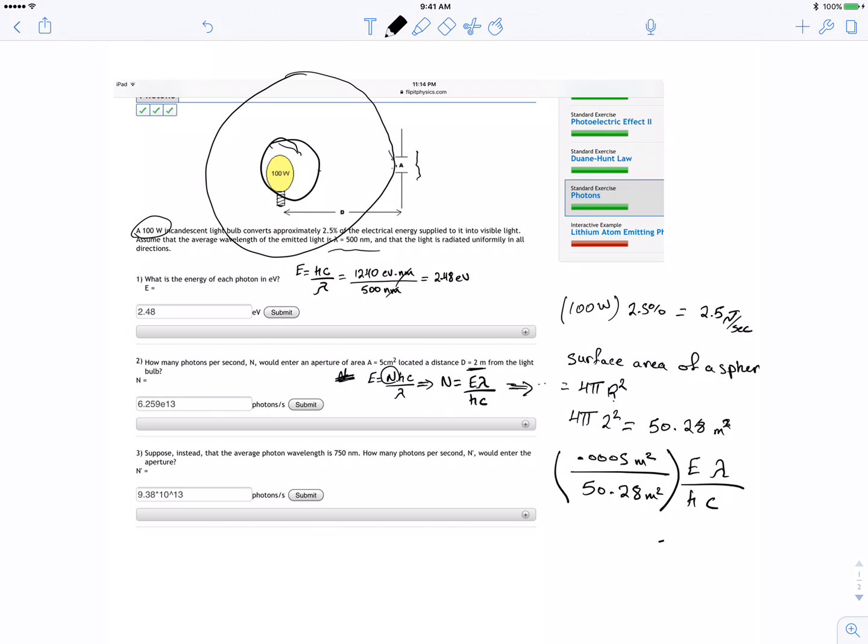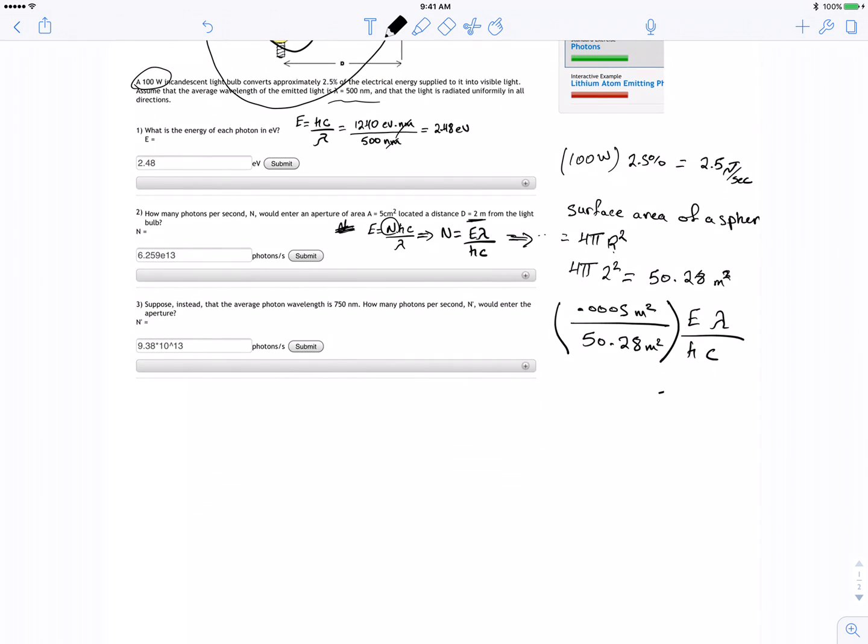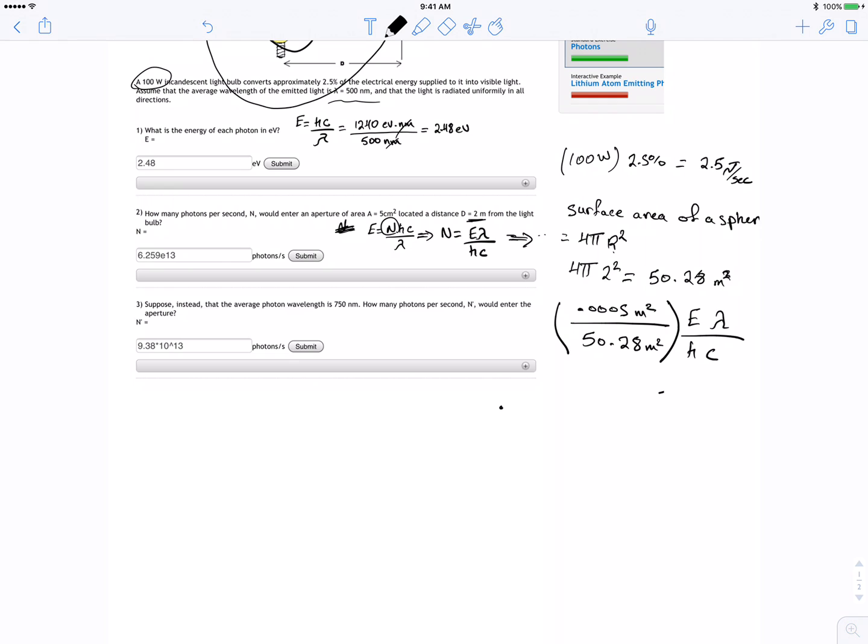Sounds a little complicated but it's okay. Let's go through this real quick. It's 0.0005 divided by 50.28 times, remember the energy is 2.5 times lambda. Lambda is 500 times 10 to the negative 9 meters.